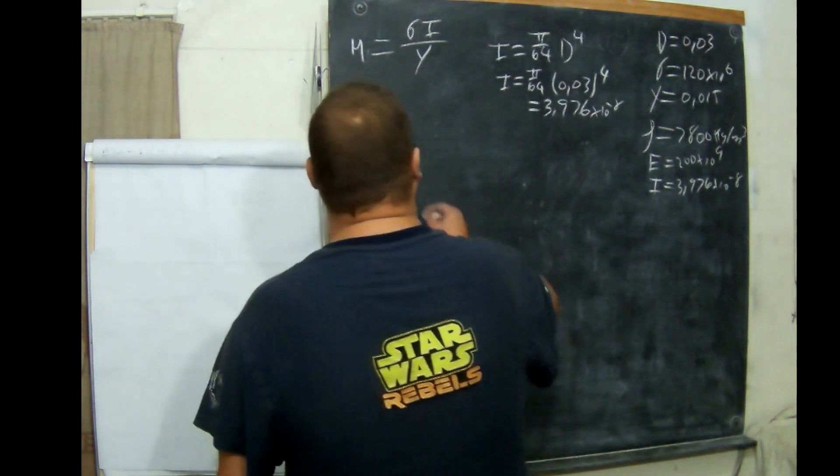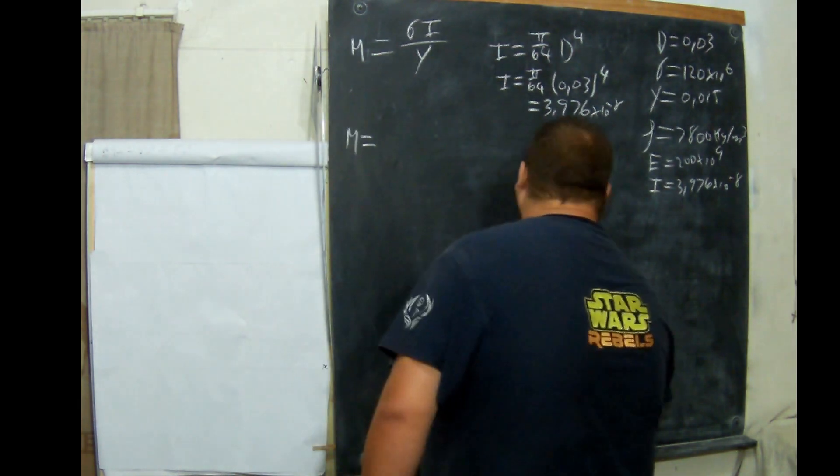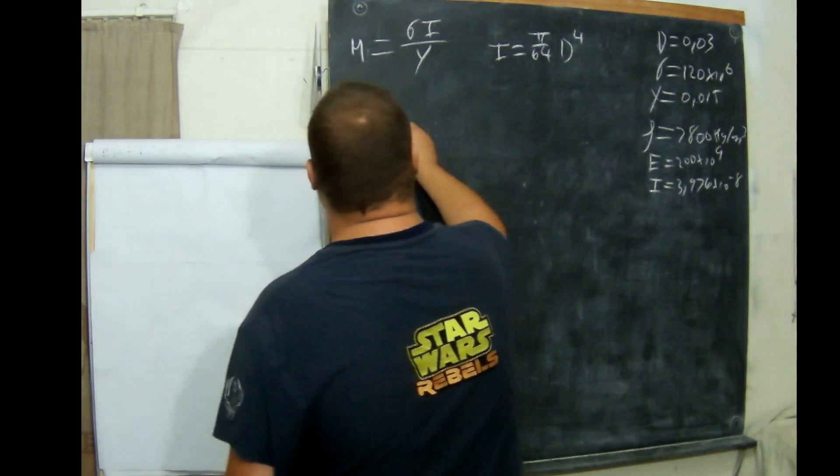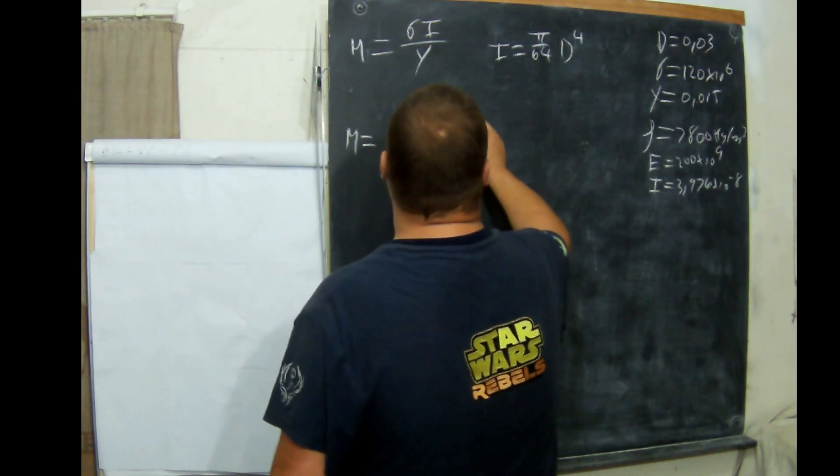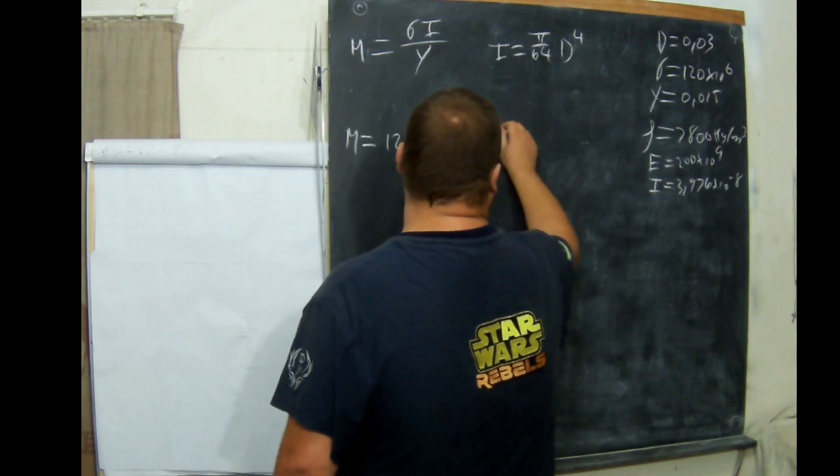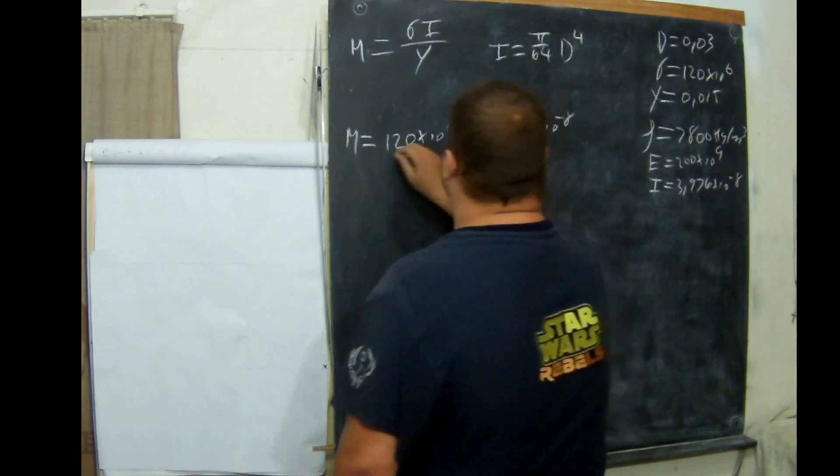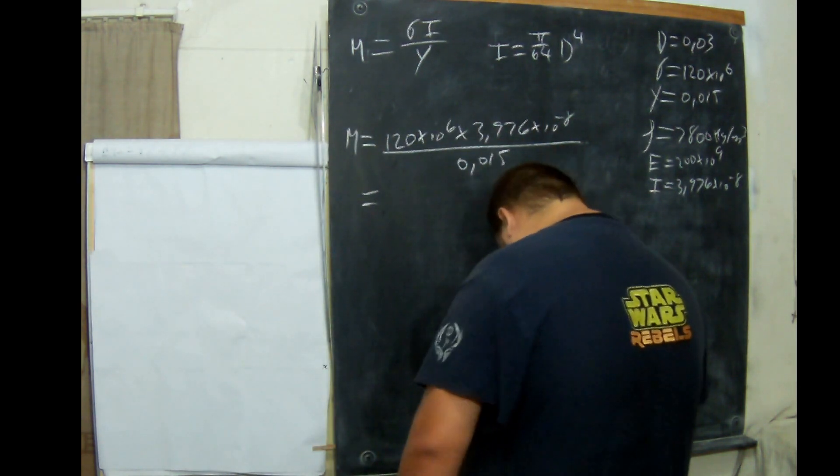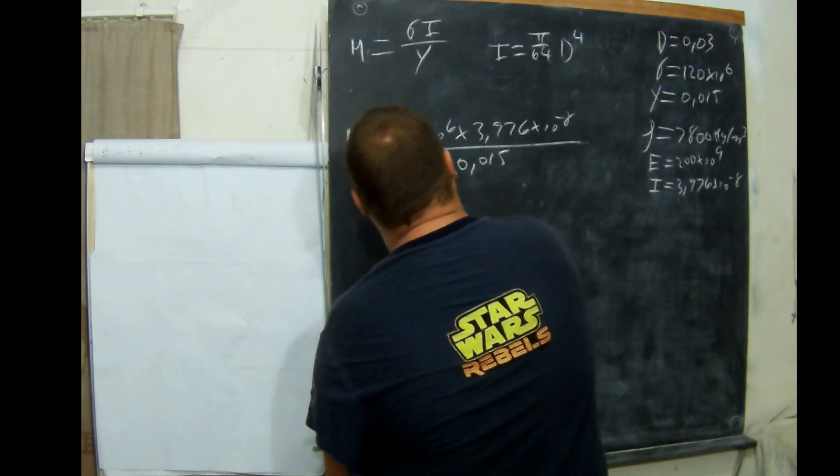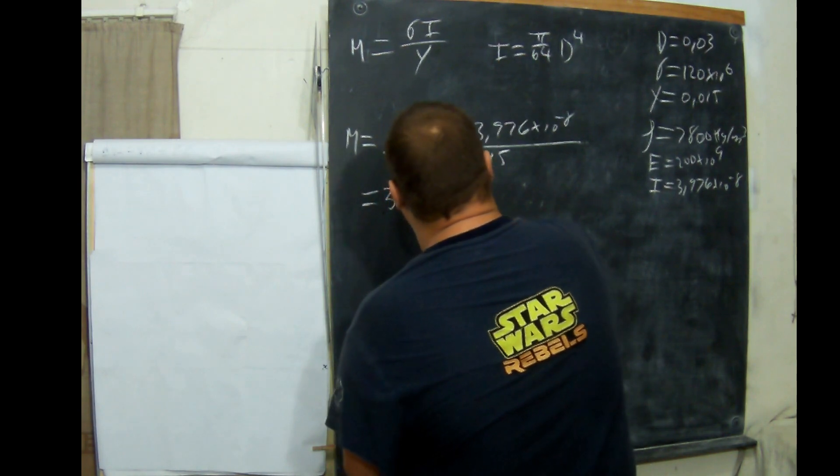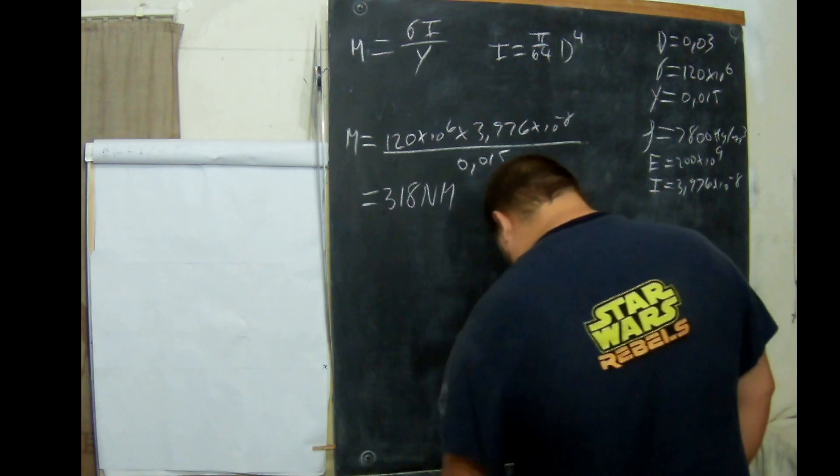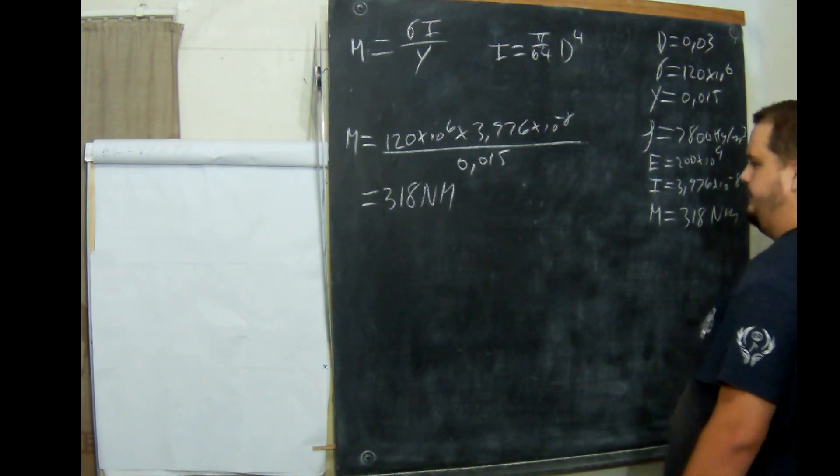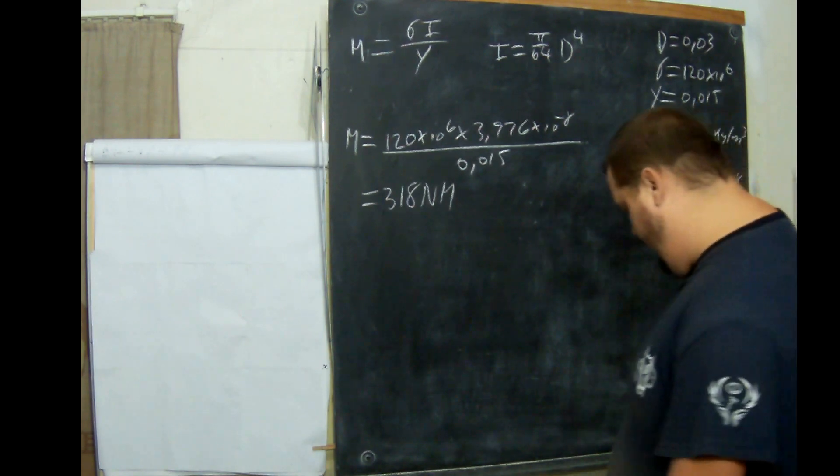So M equals 120 times 10 to the 6 times 3.976 times 10 to the negative 8, all over 0.015. And that equals 318 Newton meters.